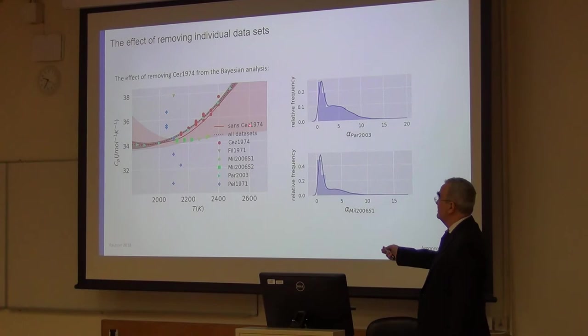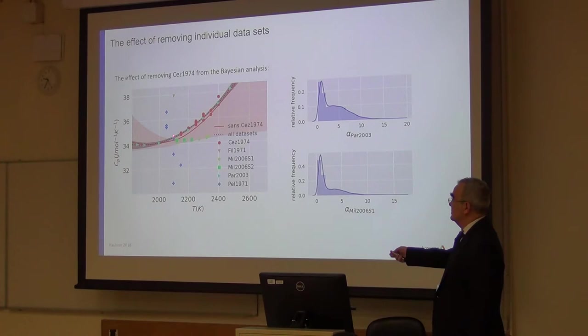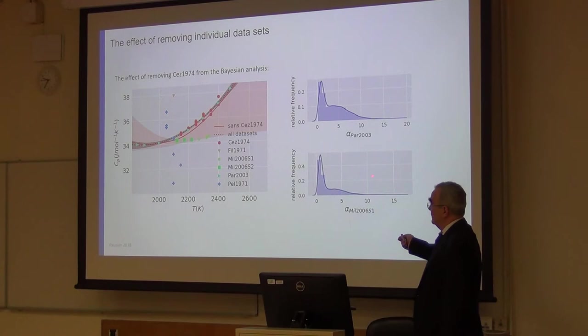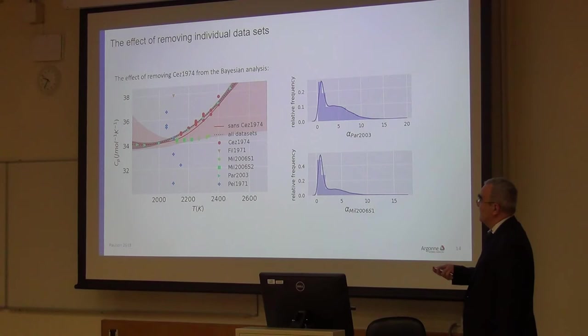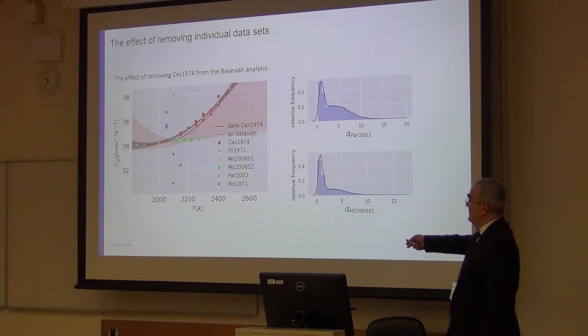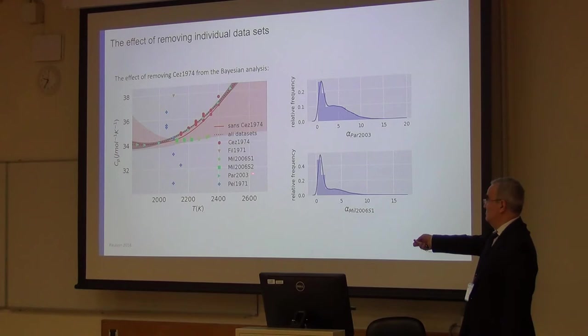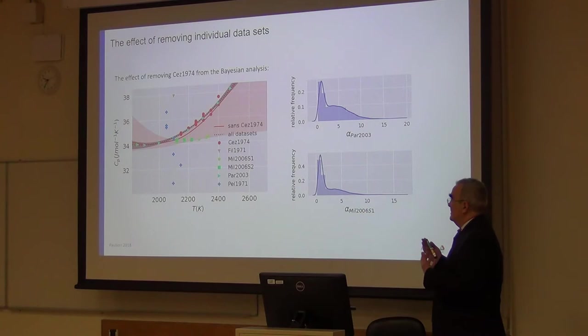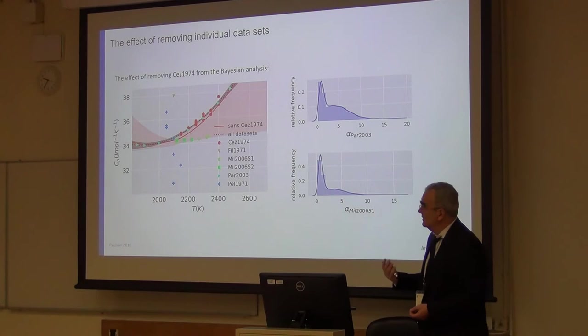If we include all of them, all data sets, then we get this dotted line as a result of the Bayesian analysis. The optimal model is this one, and the uncertainty is quite small. If we remove this paper, results from this paper, then we get a model which is the red line, not much different, but the uncertainty is extremely large. So I believe that is because the hyperparameters for the two papers that are the main contributors, the Miller and this other one Paradien 2003, are bimodal. And being bimodal, that tells me the algorithm cannot decide in the absence of the Cezairliyan data if it should go with a quadratic form or simply with a constant.